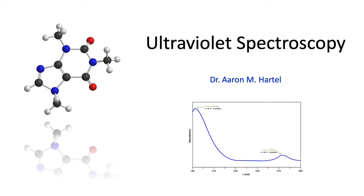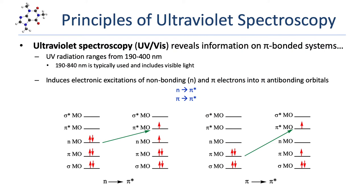In this lesson, we're going to explore ultraviolet spectroscopy and how it can be used to analyze the pi bonding in organic molecules. Ultraviolet spectroscopy, or UV-Vis spectroscopy, is another form of absorption spectroscopy. In absorption spectroscopy, molecules absorb radiation and then undergo some sort of transformation. The amount of energy imparted from ultraviolet radiation induces electronic configurational changes in molecules.